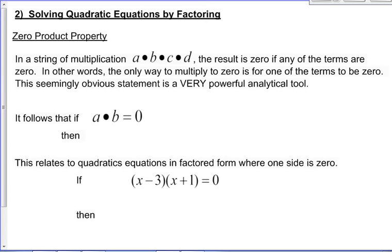Beyond solving by graphing, our next technique — and probably the most important one — is solving by factoring. This relies on the zero product property: in a string of multiplication a times b times c times d, the result is zero if any of the terms are zero. The only way to multiply to zero is for one of the terms to be zero. If a times b equals zero, then either a equals zero or b equals zero — those are the only possibilities.